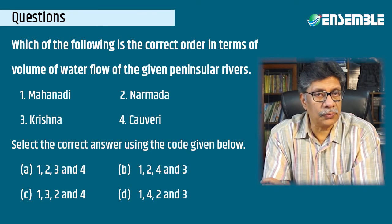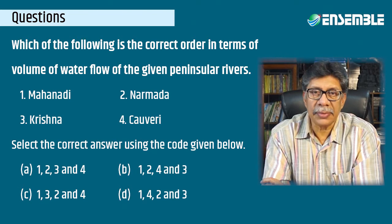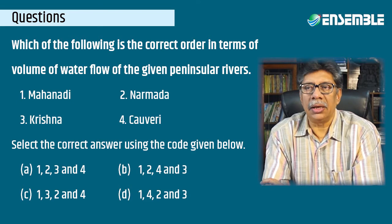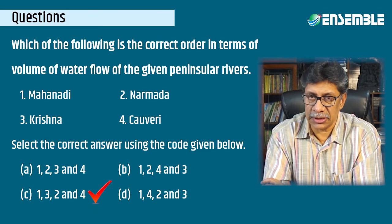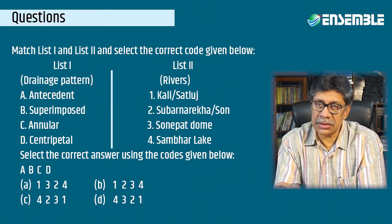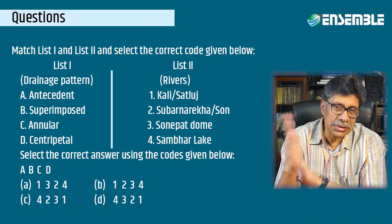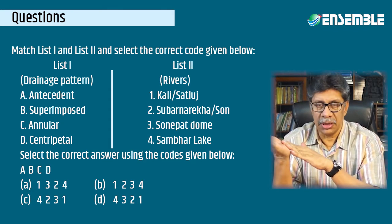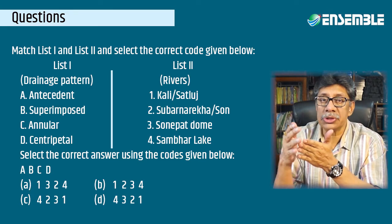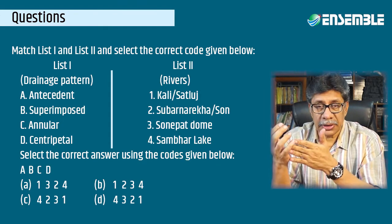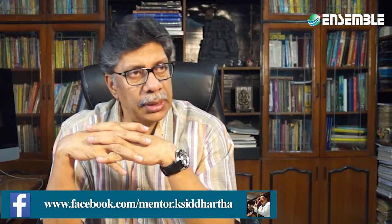Another representative question asked for the correct order in terms of volume of water flow among peninsular rivers: Mahanadi, Krishna, Narmada, and Kaveri. The volume of water — in terms of Cusecs and Cumax — had to be measured and arranged. Yet another fact-based matching question paired drainage types with rivers: antecedent drainage with Kali and Sutlej; superimposed drainage with Suvarnarekha and Son; and centripetal drainage with Sambhar. Most questions asked from drainage have been fact-based so far.